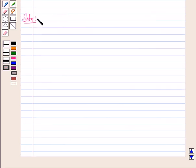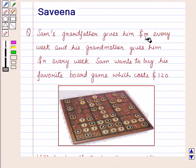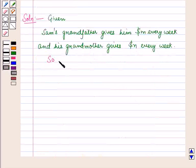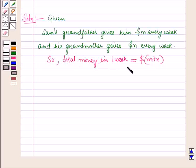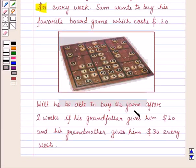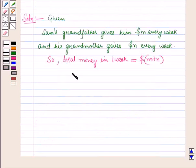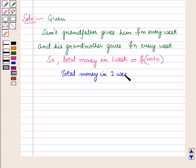Now let us start with the solution of this question. In the question it is given that Sam's grandfather gives him M dollars and his grandmother gives him N dollars every week, so he gets a total of M plus N dollars every week. Sam wants to buy his favorite board game after 2 weeks. So in 2 weeks he will have a total of 2 into M plus N dollars.